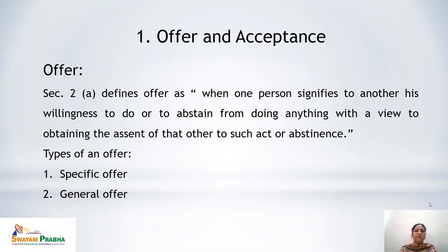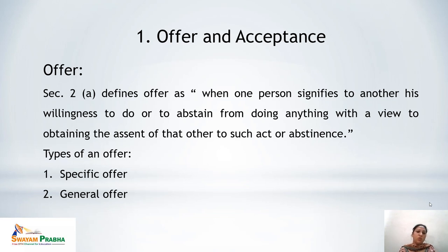If these three points — expression of willingness, another person, and obtaining the assent of that person — are present, the activity can be called an offer. There are two parties involved: the person who offers is called the offeror, and the person to whom the offer is made is known as the offeree.